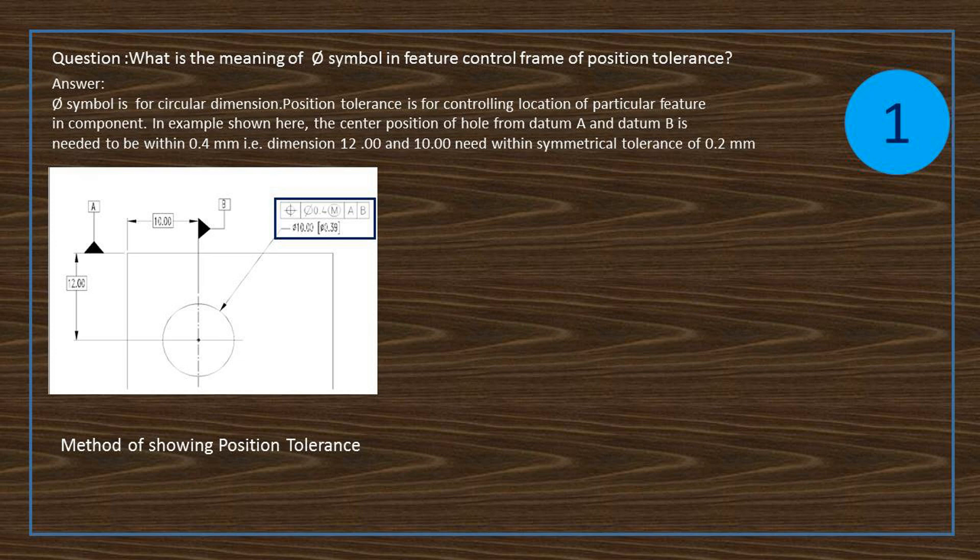Position tolerance is for controlling location of particular feature in component. In an example shown here, the center position of hole from datum A and datum B is needed to be within 0.4 mm. Dimensions 12 and 10 need within symmetrical tolerance of 0.2 mm.